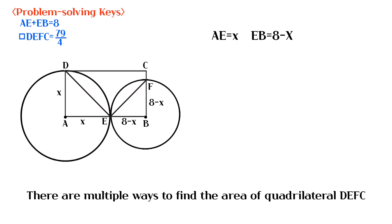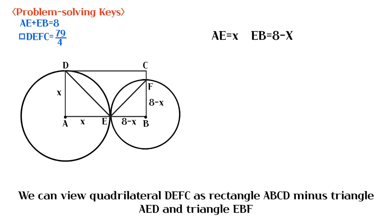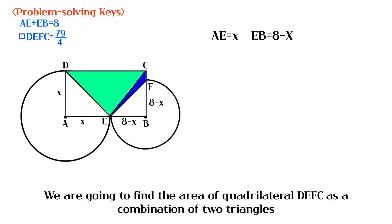There are multiple ways to find the area of quadrilateral DEFC. We can view it as a combination of two triangles, as a combination of two triangles and one rectangle, or as rectangle ABCD minus triangle AED and triangle EBF. We are going to find the area of quadrilateral DEFC as a combination of two triangles.